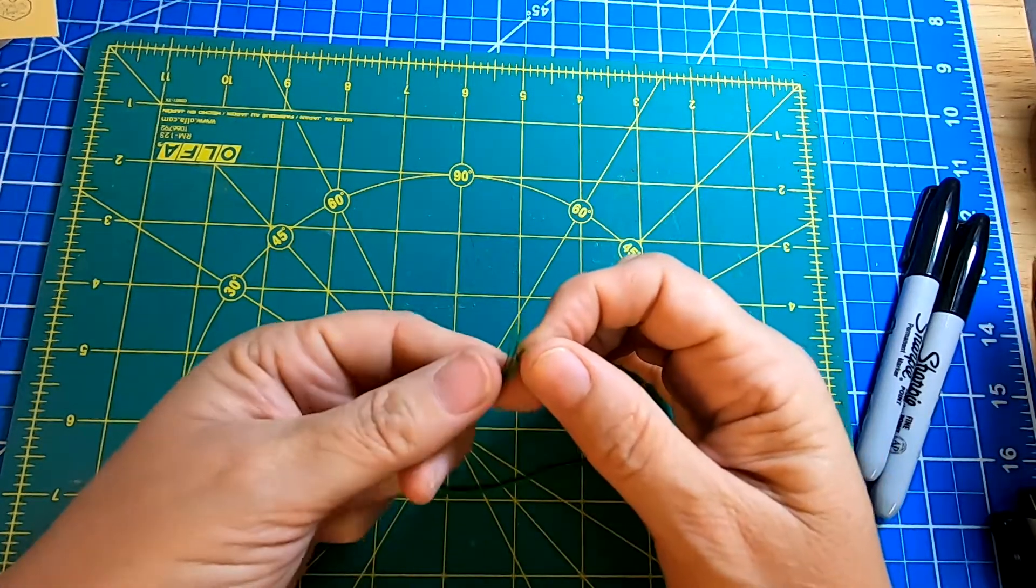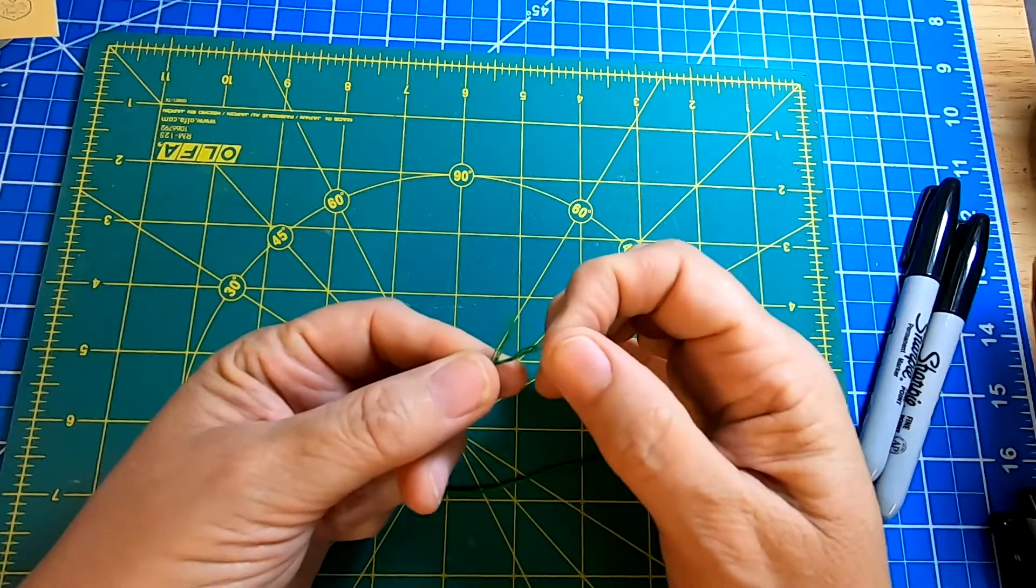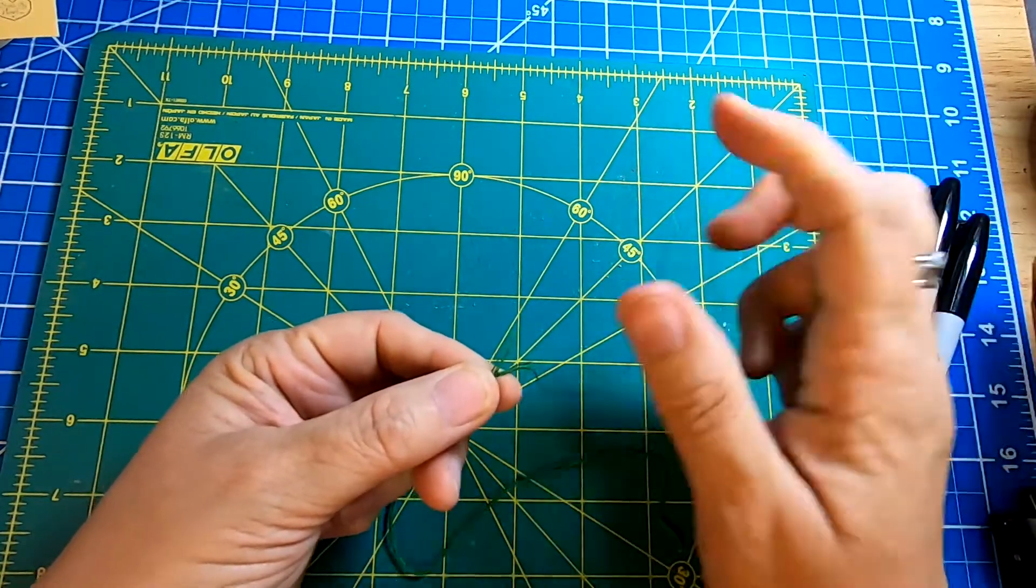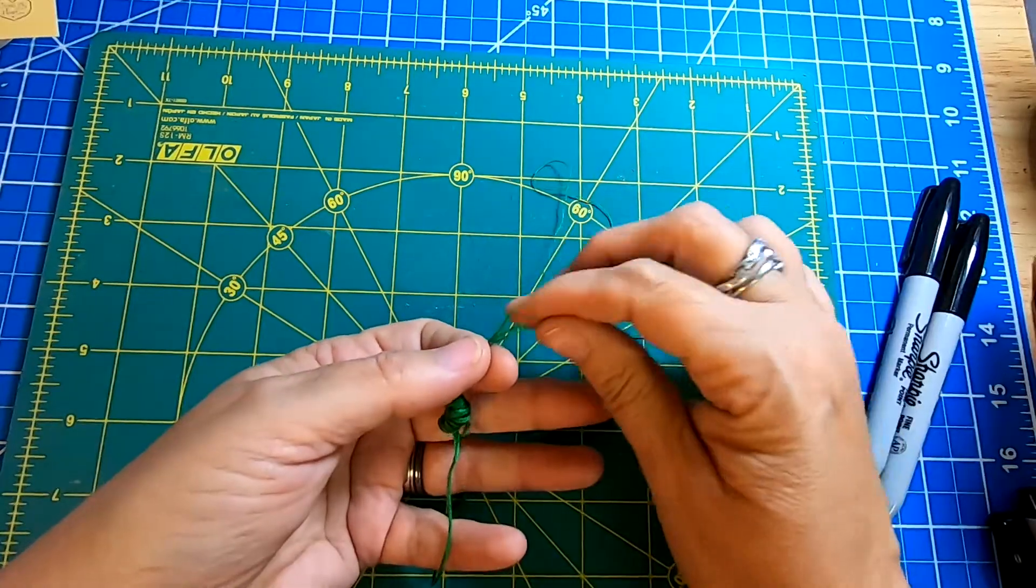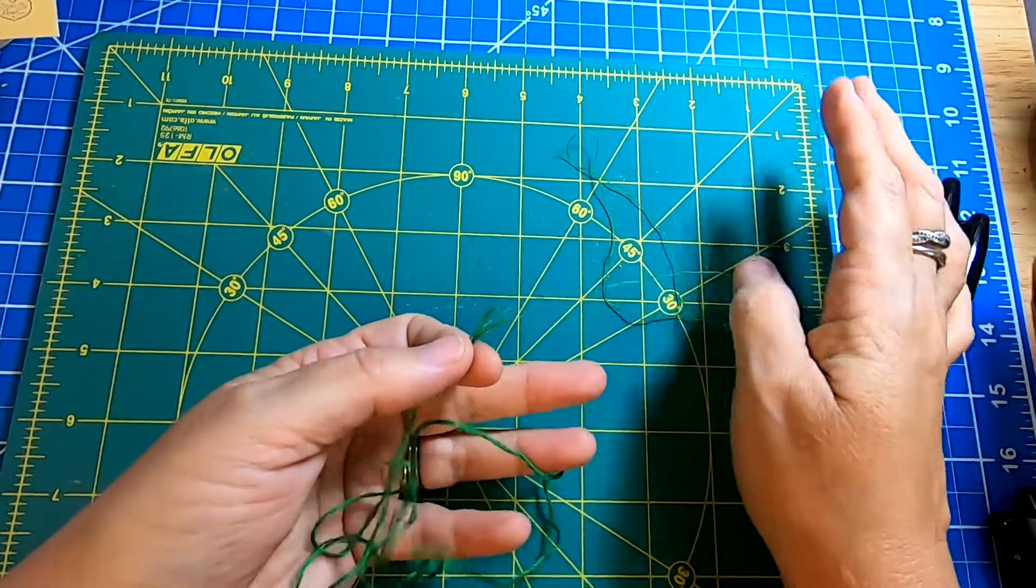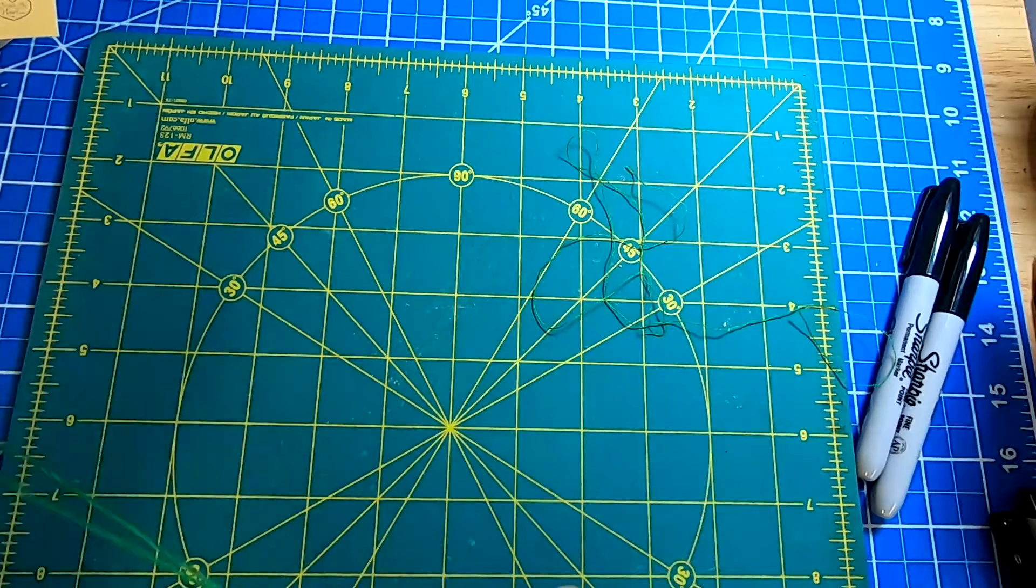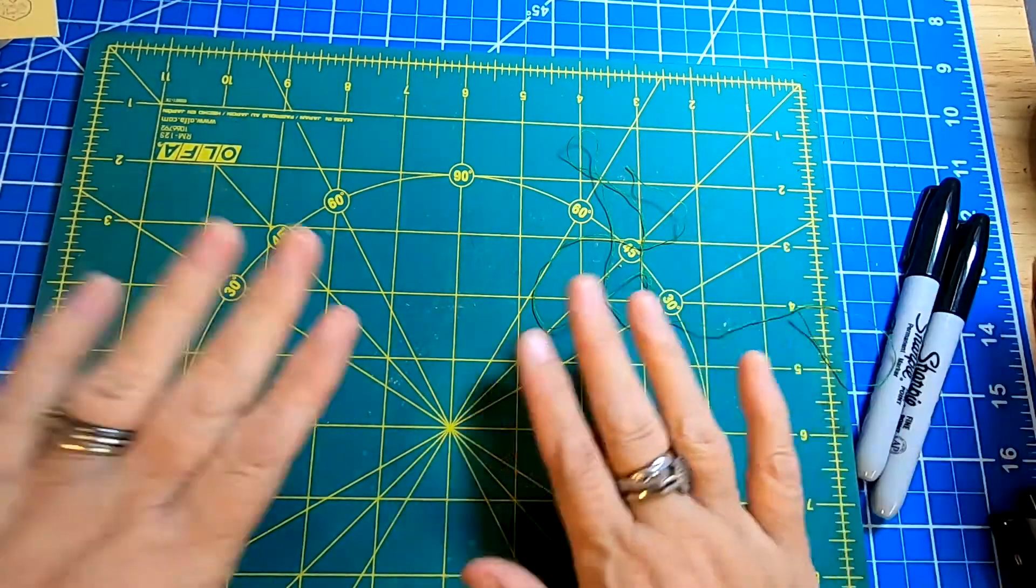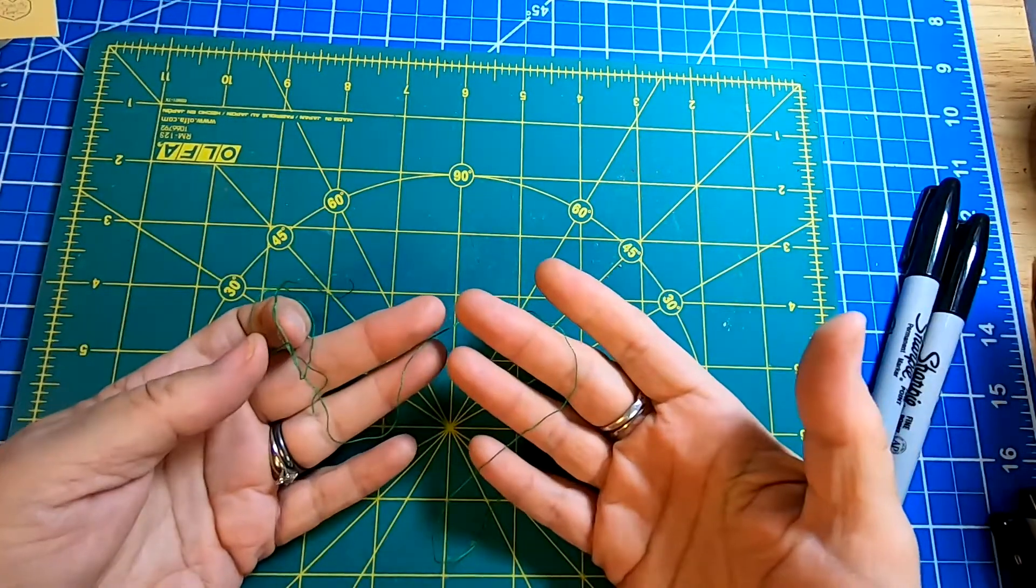Flare out your floss strands and grab only one. Holding the other five slightly snugly, pull only the single strand of floss from the others. It will bunch up behind your fingers, but once the single thread is removed, it will uncoil without knotting.